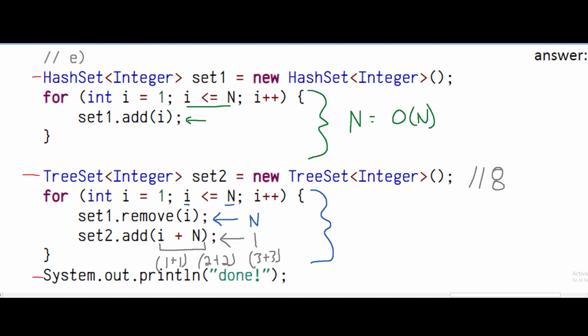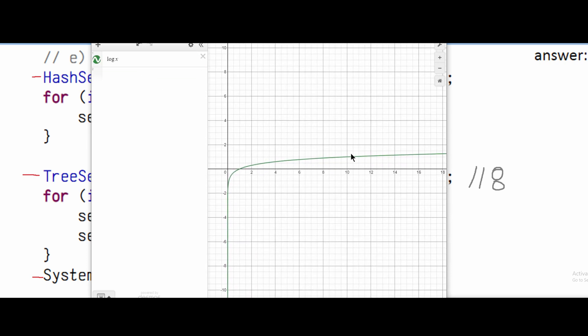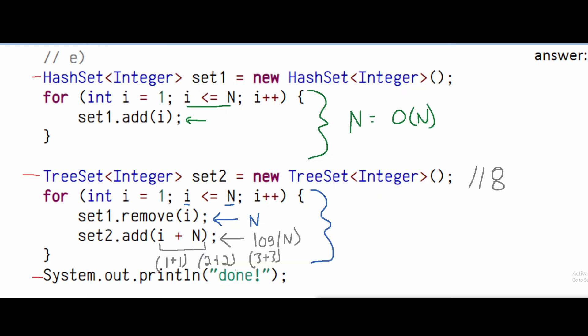So this has to be log of n, and we can see that if we have a calculator here, we can plot a log of x and see that it's slowly increasing over time, just kind of like how these would be slowly increasing over time together, from 1 plus 1 to 2 plus 2, 3 plus 3, and so on and so forth.